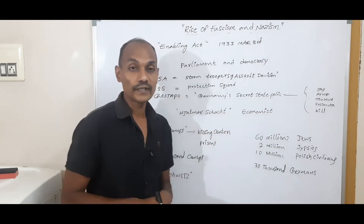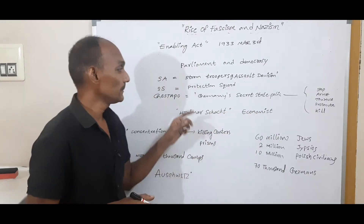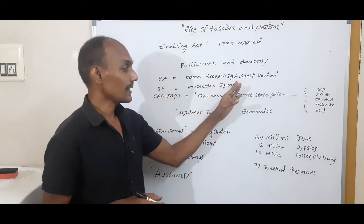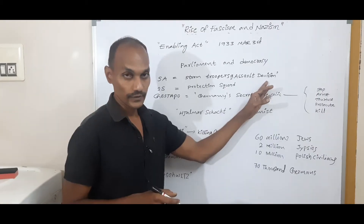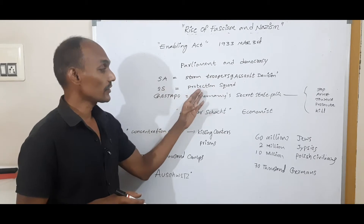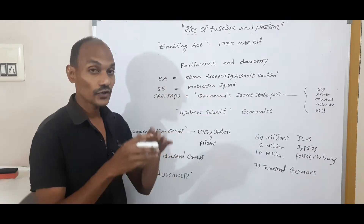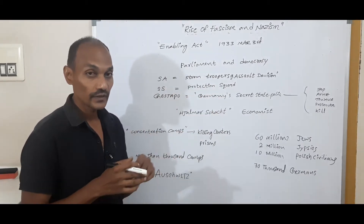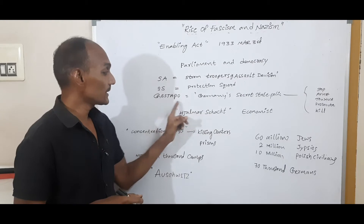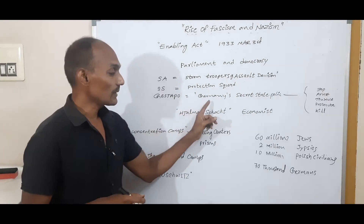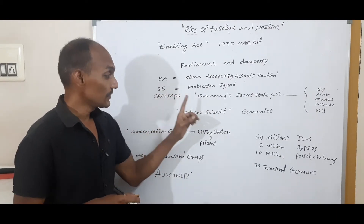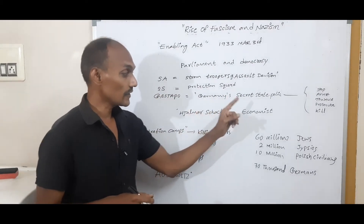He formed SA — Stormtroopers or Assault Division — and SS, which means the Protection Squad, created especially for Hitler. He also established the Gestapo, which is Germany's secret state police.